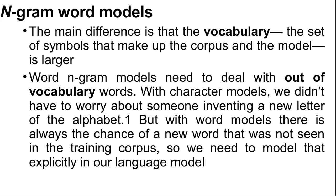With word models, we have at least tens of thousands of symbols and sometimes millions. The wide range is because it is not clear what constitutes a word. In English, a word is a sequence of letters surrounded by spaces, but in some languages like Chinese, words are not separated by spaces. Even in English, many decisions must be made to have a clear policy on word boundaries — for example, how many words are in "ne'er-do-well" or in a telephone number. Word n-gram models also need to deal with out-of-vocabulary words. With character models, we don't have to worry about someone inventing a new letter of the alphabet, but with word models there is always the chance of a new word not seen in the training corpus.